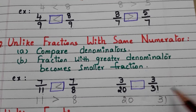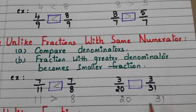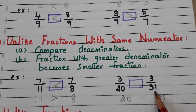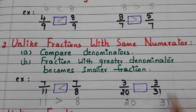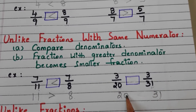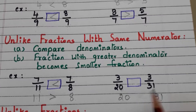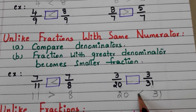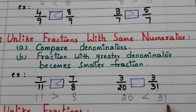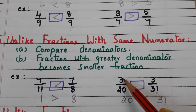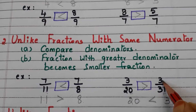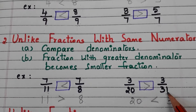Let us go to another example. Here we have 3 by 20 and 3 by 31. Compare the denominators 20 and 31 — 20 is less than 31. So 3 by 20 is greater than 3 by 31.